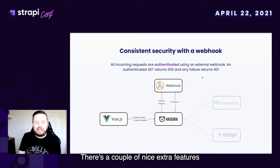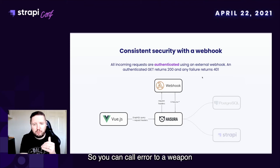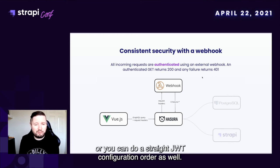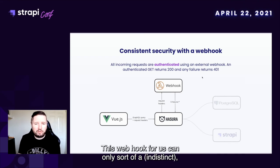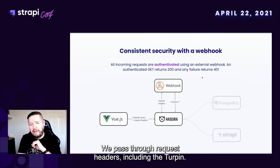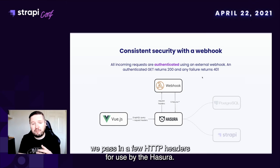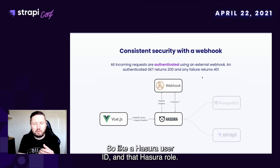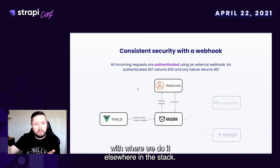There are a couple of nice extra features we've been making use of. In Hasura there is configurable security — you can call out to a webhook or do a straight JWT configuration. We've gone down the call-out route. This webhook can only be accessed from within our private network. We pass through request headers including the token, validate the token at the webhook, check a few other bits and pieces. Then as we come back, we pass in a few HTTP headers used by Hasura, like a Hasura user ID and a Hasura role. It's nice packaged-up security and allows us to keep our approach consistent with where we do it elsewhere in the stack.